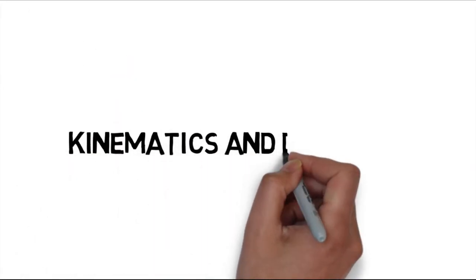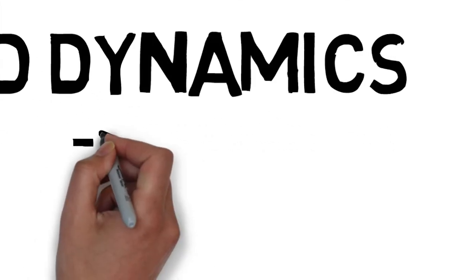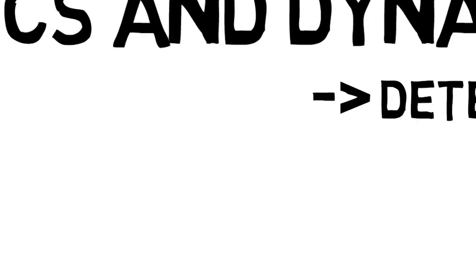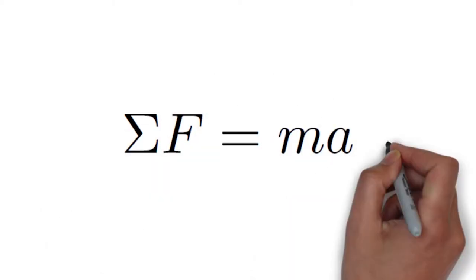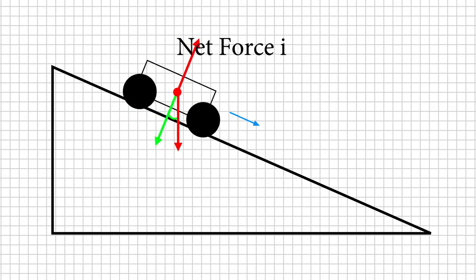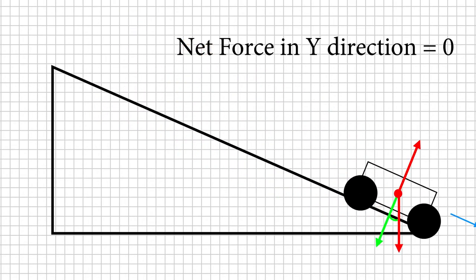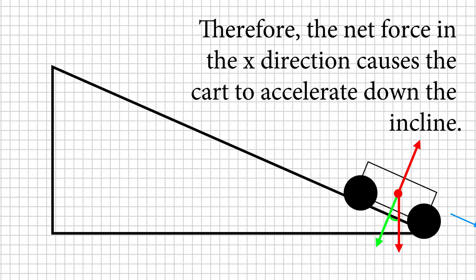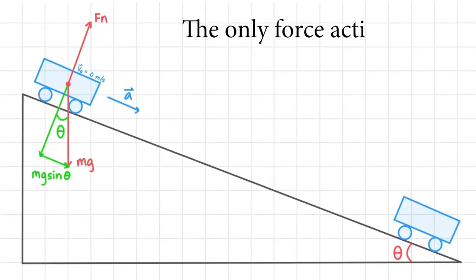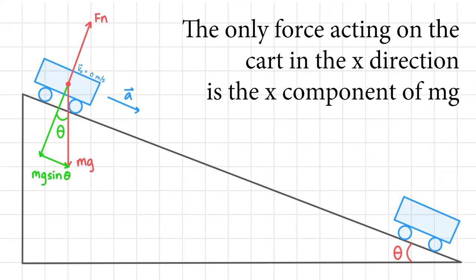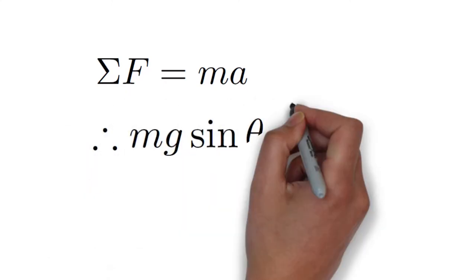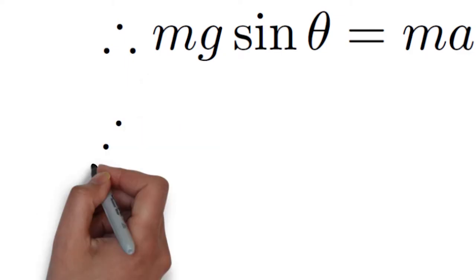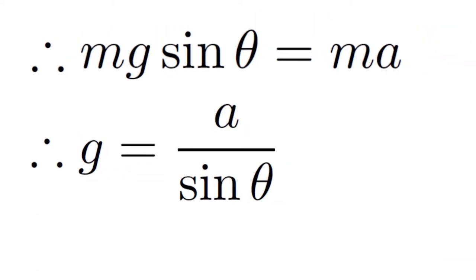For the incline plane experiment, we used kinematics and dynamics to determine g by measuring the time it takes for a cart to roll down various incline angles. From dynamics, sigma F equals ma, and the net force in the y-direction perpendicular to the incline is zero. Therefore, the net force in the x-direction parallel to the incline causes the cart to accelerate. The only force acting in the x-direction is the x-component of mg, which is mg·sine(theta). This gives mg·sine(theta) equals ma, which rearranges to g equals a divided by sine(theta).